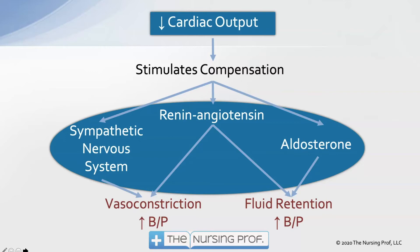The renin-angiotensin system is also kicked in — it causes vasoconstriction and fluid retention. Then aldosterone kicks in, which causes fluid retention and helps to increase blood pressure. So these compensatory mechanisms are all aimed to try to increase the blood pressure that has dropped as a result of decreased cardiac output. However, in a patient with heart failure these compensatory mechanisms won't help, and in fact they make the patient worse.